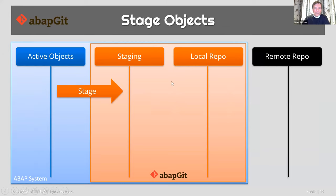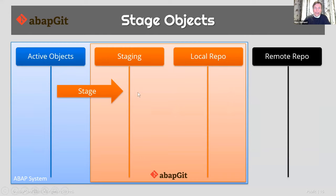Now we can take the active objects through the reverse process to push some changes from our ABAP system back onto the remote side. This is what's called staging. You first go to the stage, and in the staging area you can decide which of the changes you actually want to push to the remote side. That process is then called committing — or in ABAPGIT, commit and push in one step. In this process, the ABAP source codes are serialized, changed into a file representation, and those files are selected in the staging area and moved to the remote repository.